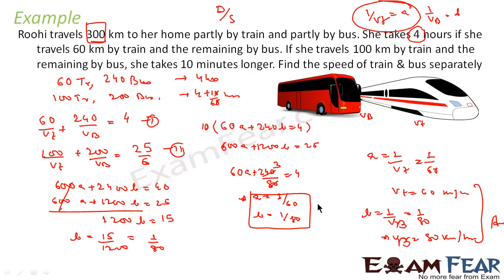To recap: we knew the distances and speeds Vt and Vb. Using time = distance/speed, we added both travel times to get 4 hours in the first case and 25/6 hours in the second. We converted to a linear equation by letting 1/Vt = a and 1/Vb = b, solved for a = 1/60 and b = 1/80, giving Vt = 60 km/h and Vb = 80 km/h.